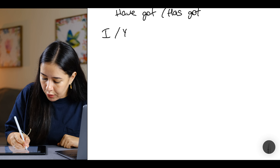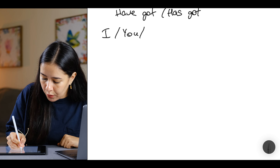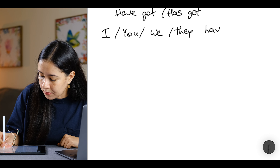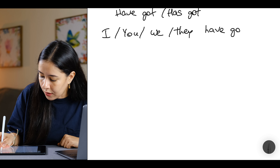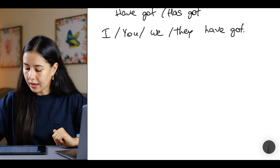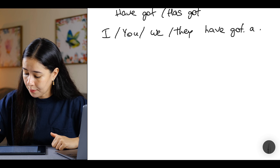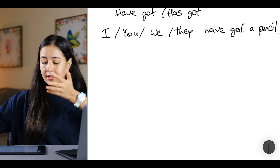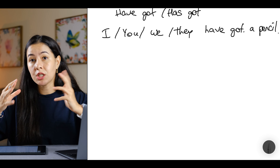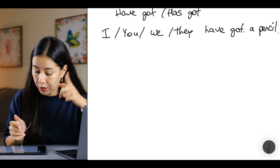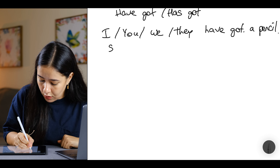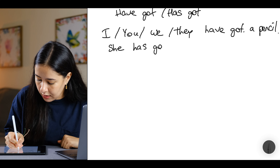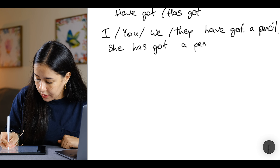So I, you, we, they — we use 'have got'. For example: I have got a pencil, or we have got a pencil. But with he, she, it — we use 'has got'. For example: she has got a pencil eraser.